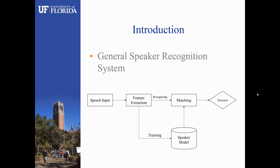Here is the general speaker recognition system. We first input the speech data and do the feature extraction. After that, we can get a feature vector, and then we enter into the training stage. In this stage, we can get the speaker models to represent the features. Next, we will do the test. In the testing stage, we will recognize the testing features and do the matching between the testing data with the training speaker models. And then we will enter into the decision stage, which will decide who is the speaker.